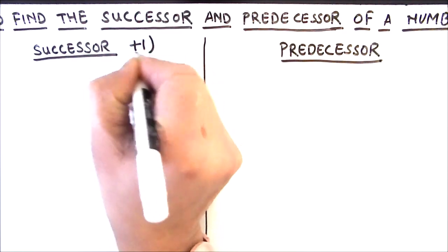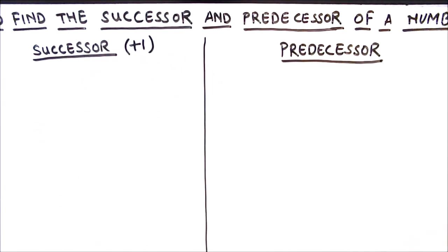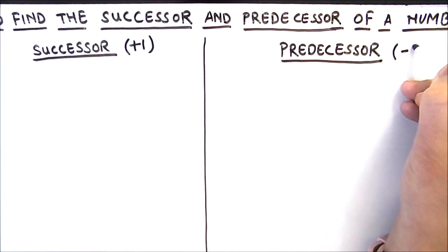We are going to add plus 1 to get the successor of any number. On the other hand, predecessor is a number which comes just before or immediate before the number.